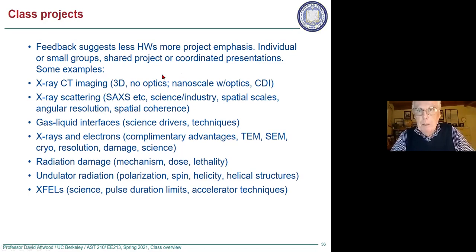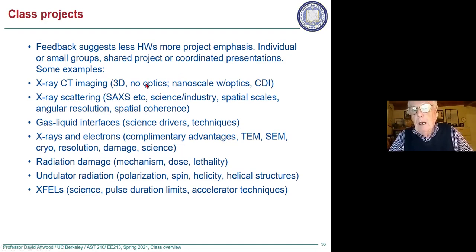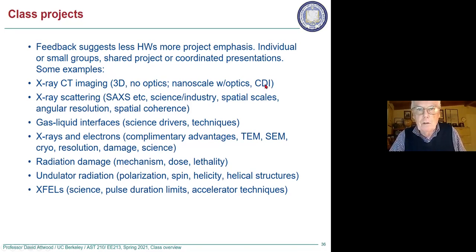X-ray CT imaging — we already spoke about this while we were waiting. Angel Rodriguez and Alex Ho both said they're interested in CT imaging, so there's an opportunity. One option might be micron scale without optics — maybe not micron, but a few tens of microns, without optics. There are great opportunities there. Or you could do nanoscale with, for instance, zone plate optics. CT scans of individual biological cells. And then there's coherent diffractive imaging, which uses no optics but requires a high degree of coherence.